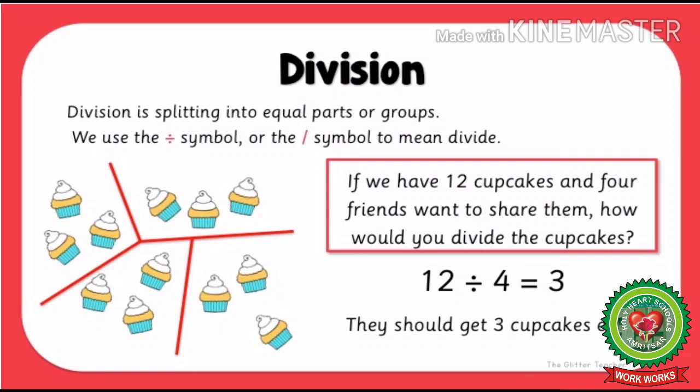For example, if we have 12 cupcakes and 4 friends want to share them, how would you divide the cupcakes? We have to divide 12 cupcakes among 4 friends. So we will make 4 groups and divide the cupcakes equally. Hence, each friend will get 3 cupcakes.